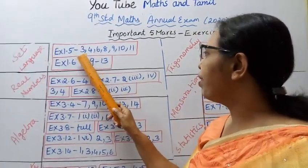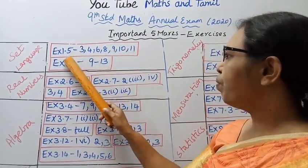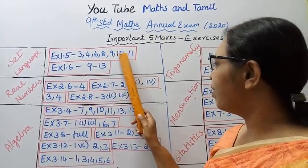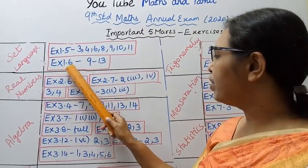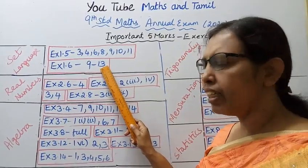Exercise 1.5: problems 3, 4, 6, 8, 9, 10, 11. Exercise 1.6: problems 9 through 13.